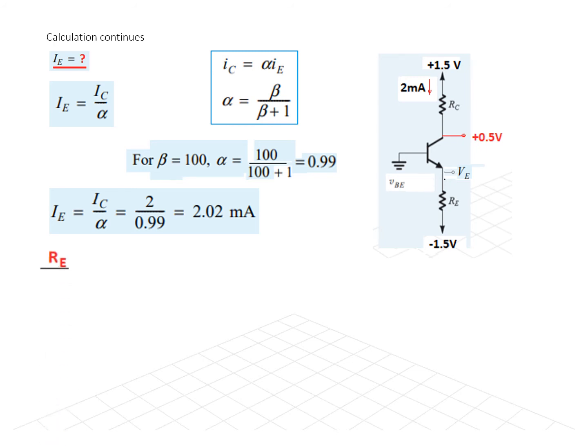And now, RE we can find. We know this value, VE. We know this value. So, we can use this formula that RE is VE minus minus 1.5 divided by IE. So, this is the value of VE that we found. This will become plus 1.5. IE we have found. So, RE is 338 ohms. So, this is the final answer that we have found. RC is 500 and RE is 338 ohm.